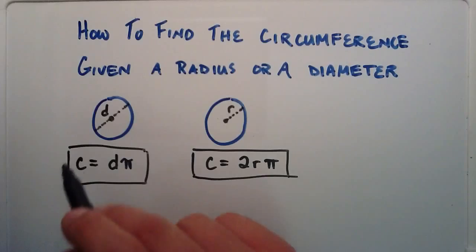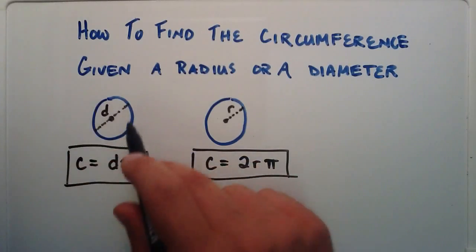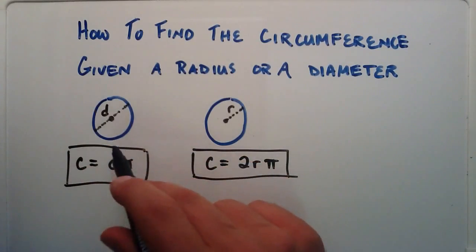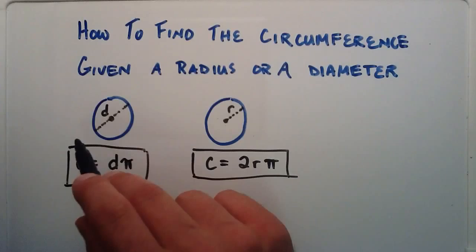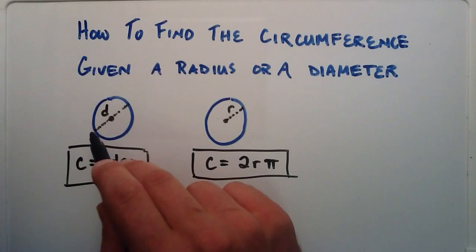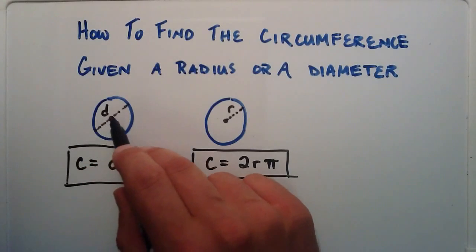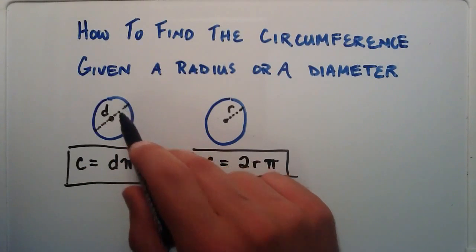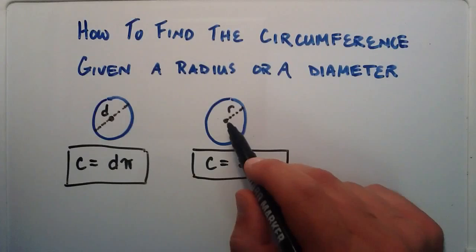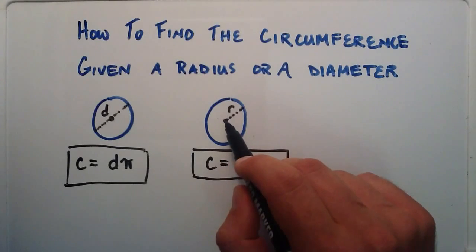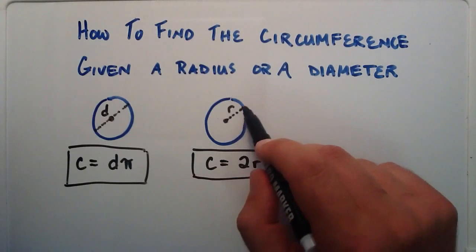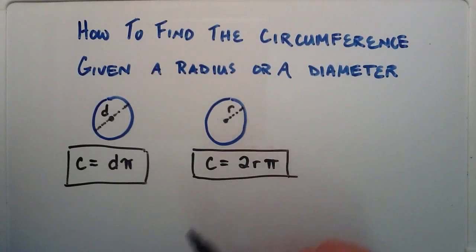So we want to find the circumference, or the outside of the circle, and we're either given the diameter — which is the distance of a line segment that starts at one end of the circle, travels through the center, and ends at the other end of the circle — or we're given a radius, which is a line segment that starts at the center of a circle and ends on any edge of the circle.